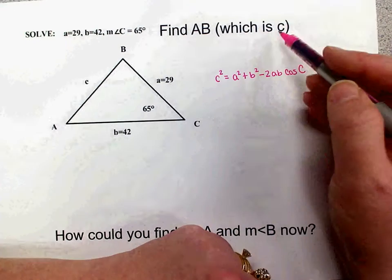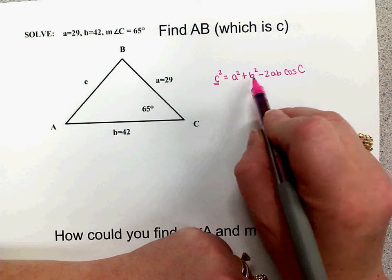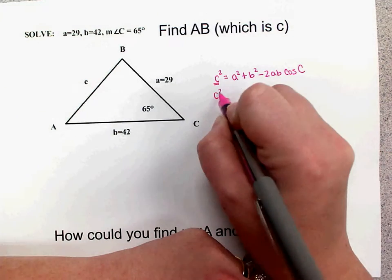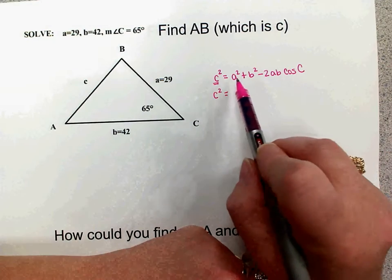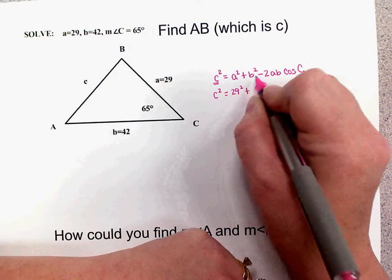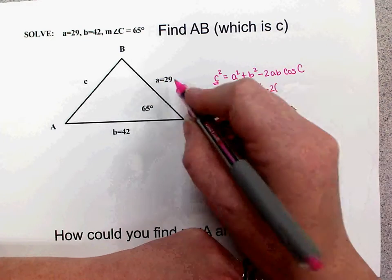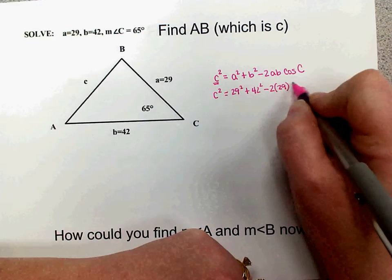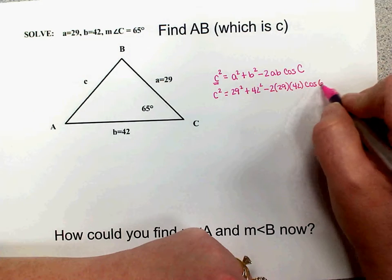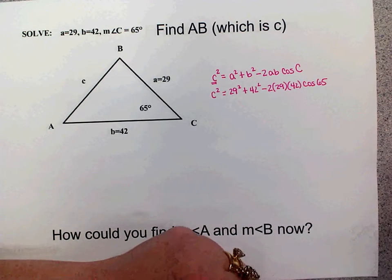Since we're solving for side C, we plug in the numbers: C squared equals 29 squared plus 42 squared minus two times 29 times 42 times cosine of 65 degrees. That looks like a big mess of numbers, but we just need to solve for C.